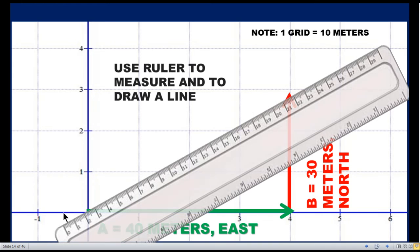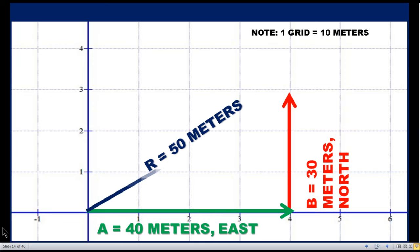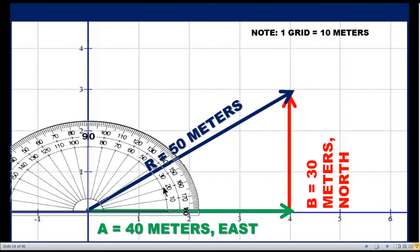The resultant vector is from origin to the head of vector B. This is the resultant vector. We can use the ruler to measure and to draw a line. The resultant in fact is 50 meters from origin to the head of vector B.